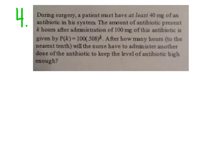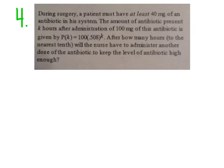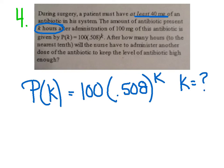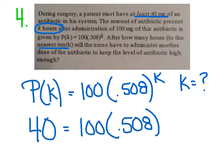During surgery, a patient must have at least 40 milligrams of an antibiotic in his system. The amount of the antibiotic present after k hours, after administration of 100 milligrams of this antibiotic, is given by this formula. 100 times 0.508 to the k. After how many hours? And, you'll notice it said k hours. So, that is what we're finding. To the nearest tenth. So, that's what we're rounding to. Will the nurse have to administer another dose of the antibiotic? All right, well, he has to have at least 40. So, I'm just going to set this equal to 40.